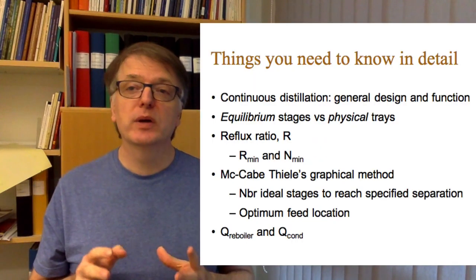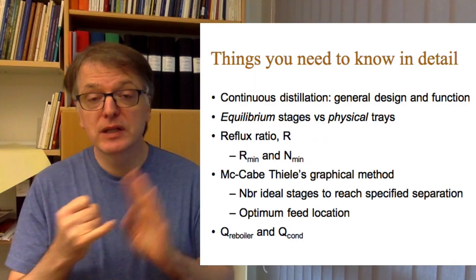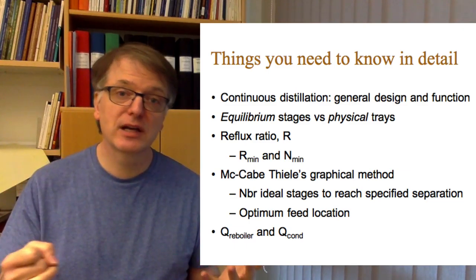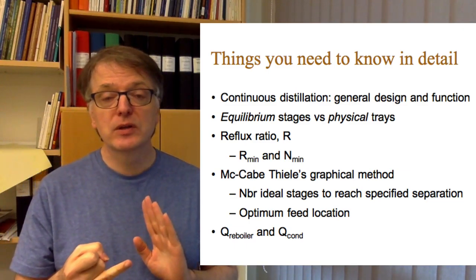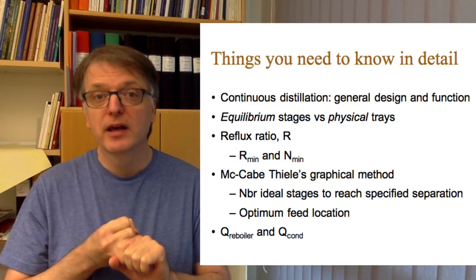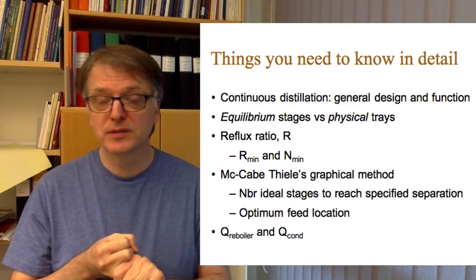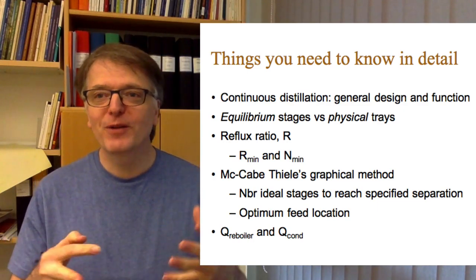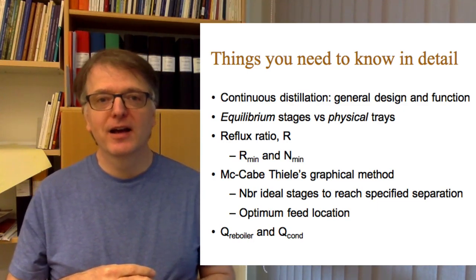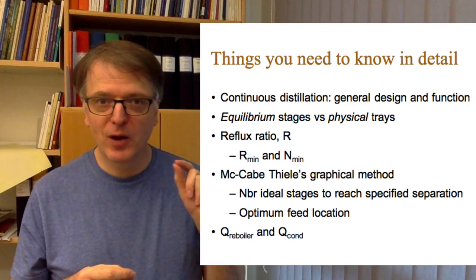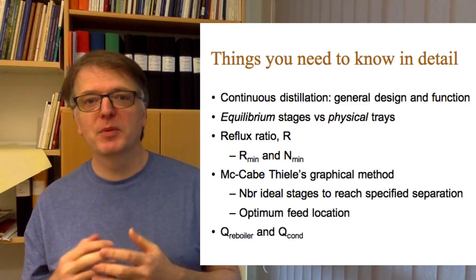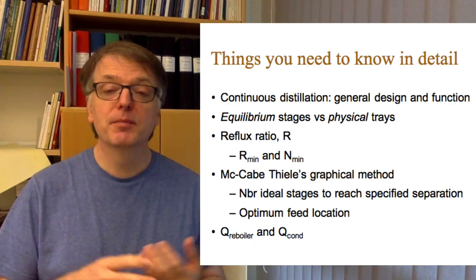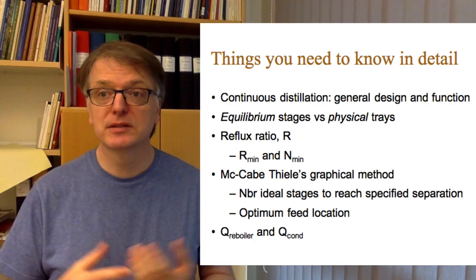Things you definitely need to know in detail in this course: you need to understand how continuous distillation works, the general design and the function. You need to distinguish between equilibrium stages and physical trays. You need to know about the reflux ratio R, and the minimum reflux ratio, how low that can be, and what happens if you put it to infinite values. Then you get the minimum number of equilibrium stages needed.